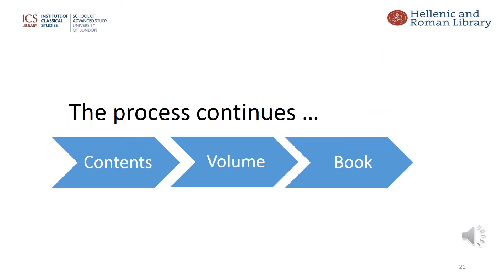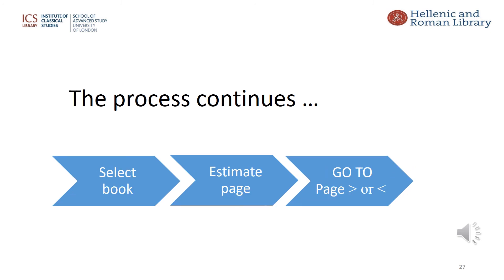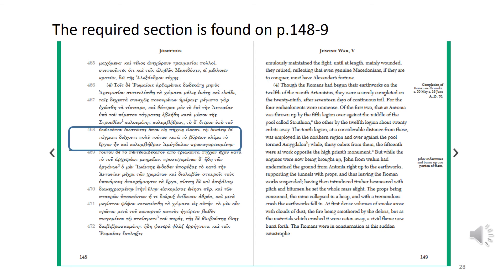The process continues as follows. Scroll down through the contents to reach Book 5, which is to be found in Volume 3. Now select Book 5, which we see runs for over 175 pages. Estimate as best you can the approximate page number and enter this in the 'Go To page' box. Then it is a matter of moving forwards or backwards to find the right section. It may be quicker to use the 'Go To page' again if your guess is not good enough.